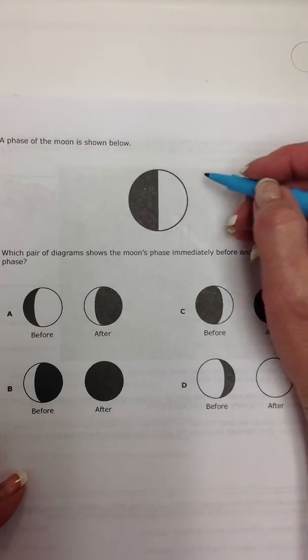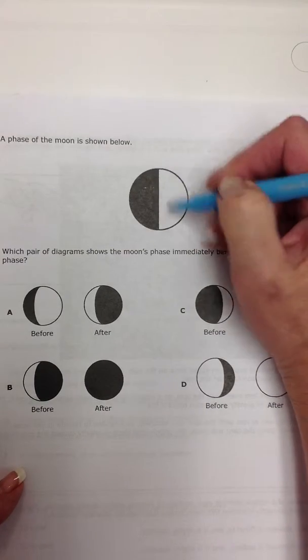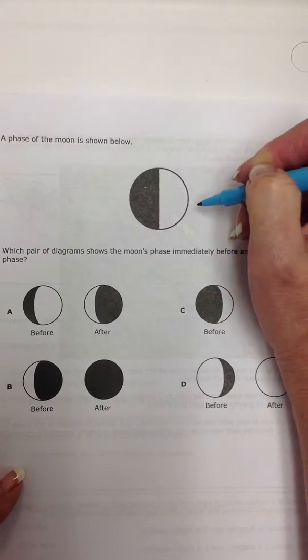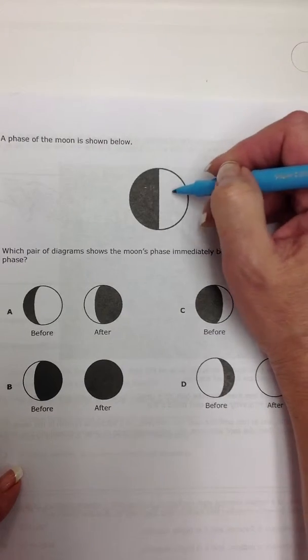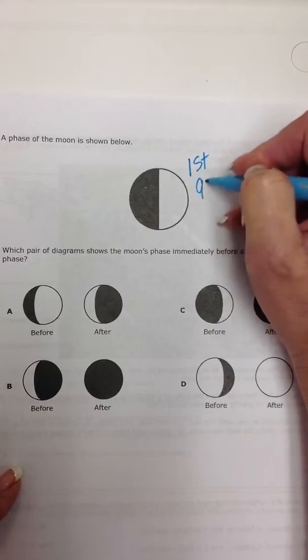Let's brainstorm real quick. What moon phase do we have? Well, it's definitely a quarter moon because half of the moon is lit up. Is it first or third? Well, light is on the right, so this is our first quarter moon.